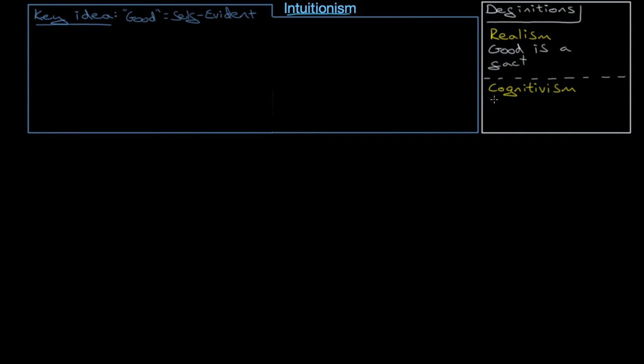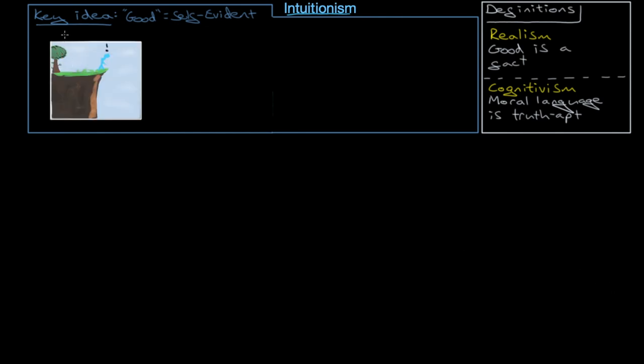They are also cognitivists because they believe that moral language or statements is truth apt. That is it can be true or false. So this good that is self-evident is stuff that you can see in the world. A bit like if you are by a cliff for instance. You can see the cliff and the sky and the tree. But you can also see danger.